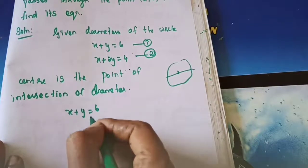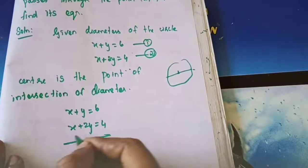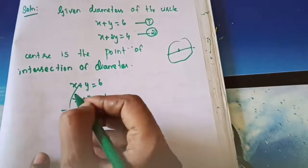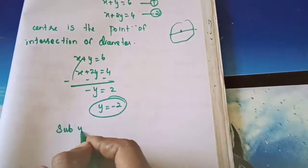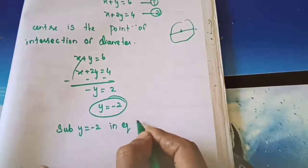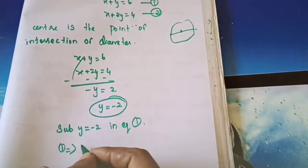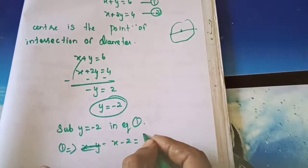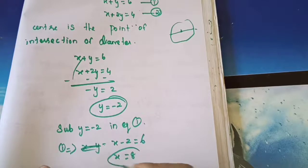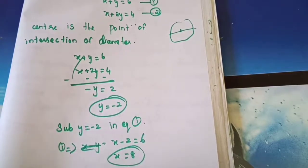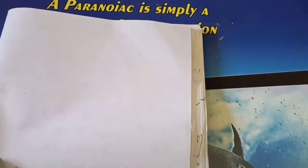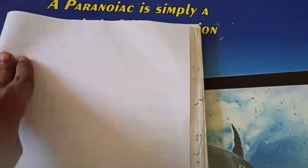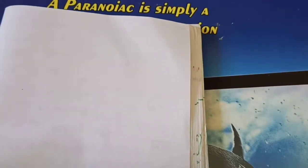Solving: x plus y equals 6 and x plus 2y equals 4. Subtracting: minus y equals 2, so y equals minus 2. Substituting y equals minus 2 into equation 1: x plus (minus 2) equals 6, so x equals 8. The center is (8, minus 2). Radius is the distance between the center and the passing-through point. Using the distance formula between (8, minus 2) and (2, 6).